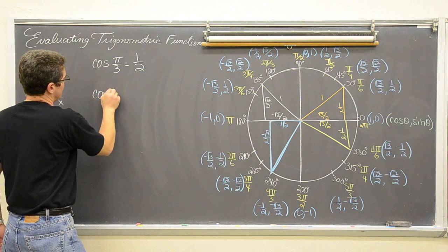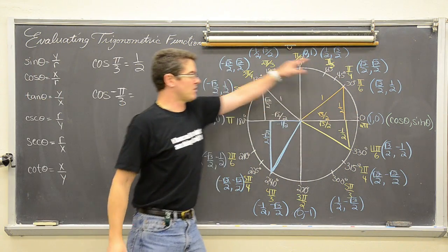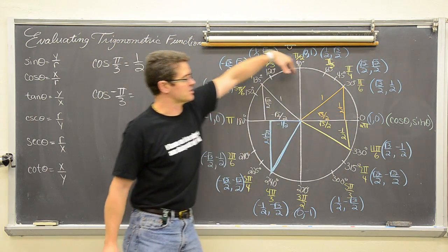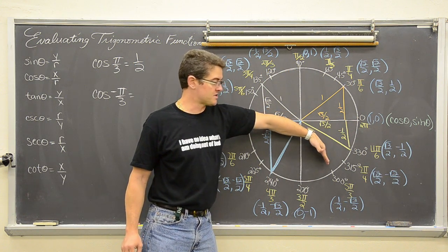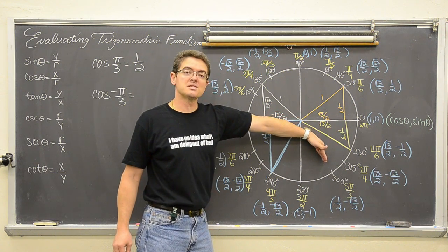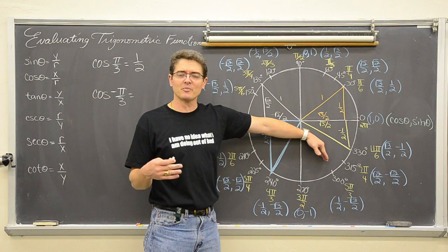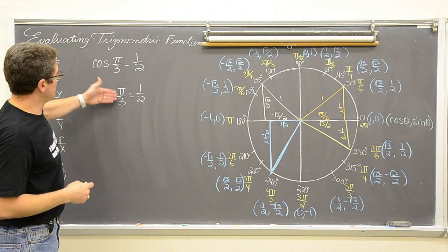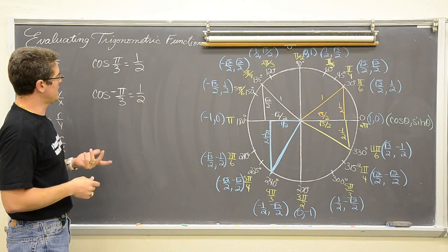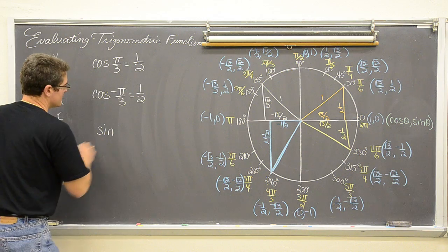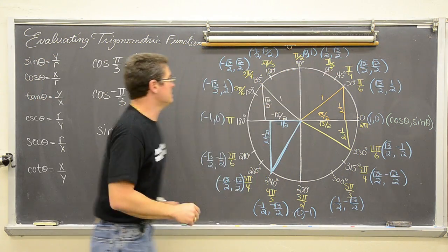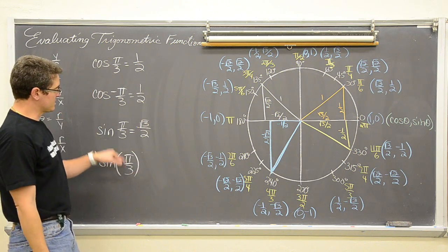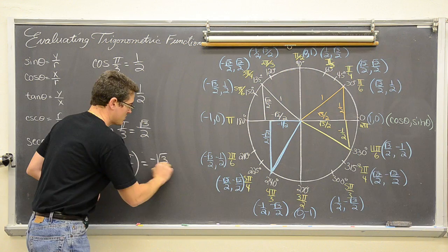Let's go the opposite direction: the cosine of negative pi over 3. Positive rotations go counter-clockwise from zero, the positive x-axis. Negative pi over 3 goes in a clockwise direction, landing you at negative 60 degrees — the same as 5pi over 3 or 300 degrees, which are coterminal angles separated by 360 or 2pi. It is still going to be the same value of one half. But it will not work for sine: the sine of pi over 3 is the y value at 60 degrees, which is square root of 3 over 2, while the sine of negative pi over 3 is negative square root of 3 over 2.